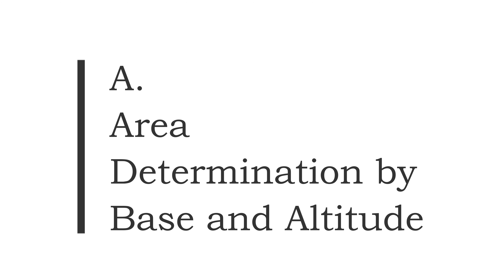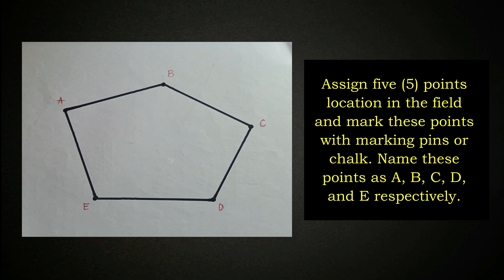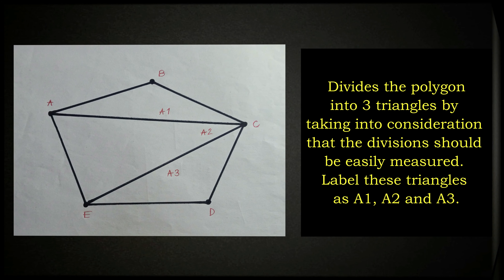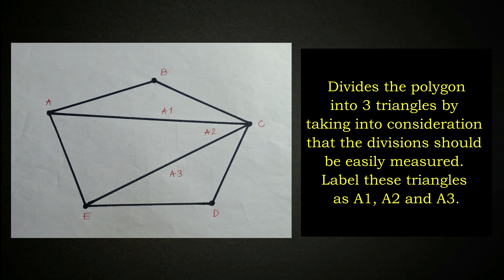First is area determination by base and altitude. Assign five point locations in the field and mark these points with marking pins or chalk. Name these points as A, B, C, D, and E respectively. Divide the polygon into three triangles, taking into consideration that the division should be easily measured. Label these triangles as A1, A2, and A3.